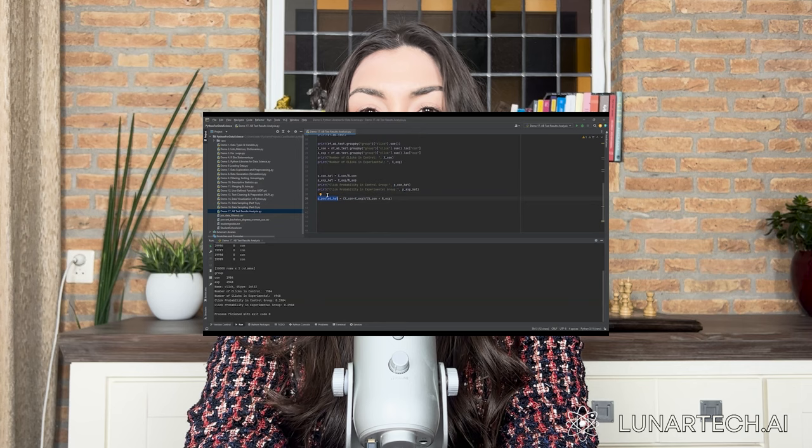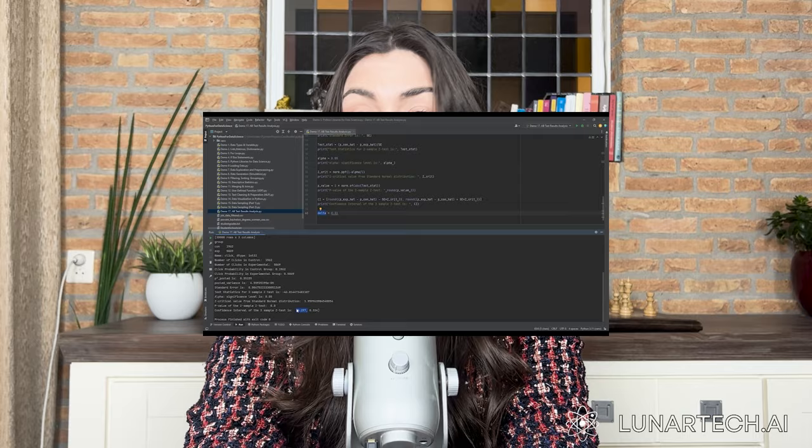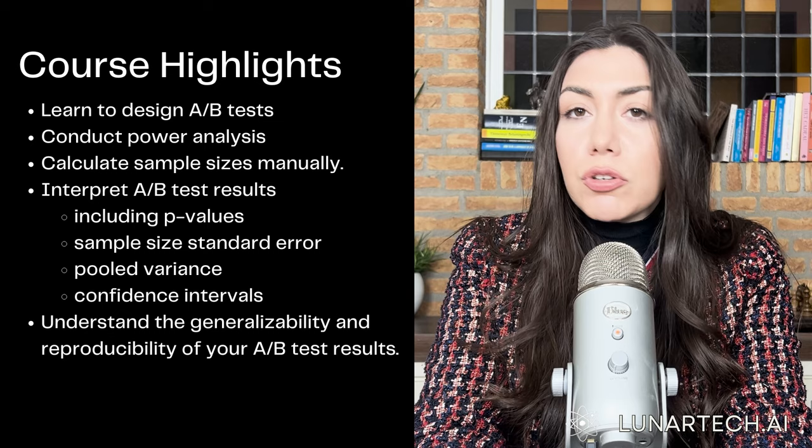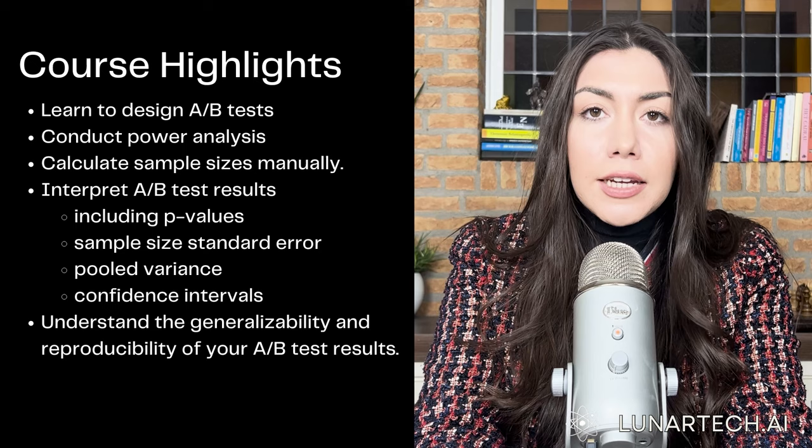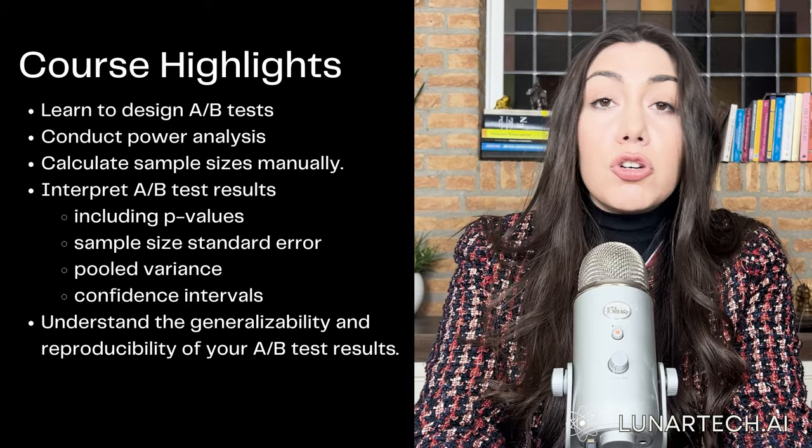Properly designing an A/B test means doing power analysis and calculating the sample size by hand by following statistical guidelines and ensuring everything is done properly. Then as the second part of this crash course we will also do a hands-on case study in Python performing A/B testing results analysis, covering important concepts such as p-values, sample size, standard error, pooled variants estimates, confidence intervals, general usability of the results, and reproducibility of the results.